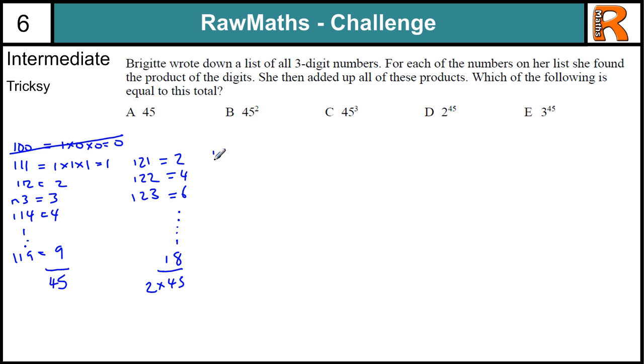And then if I have 131, 132, it's going to go 3, 6, 9, down to 27. So it's going to be 3 times 45. And just as we added up the numbers 1, 2, 3, up to 9, that makes 45. If I add up these totals, I've got 1 lot of 45, 2 lots of 45, 3 lots of 45, up to 9 lots of 45. So those are going to total up to 45 lots of 45.